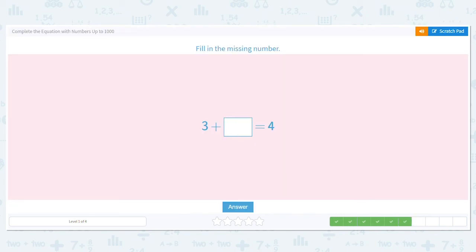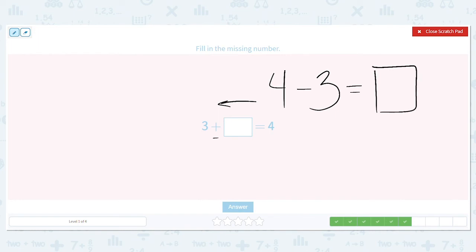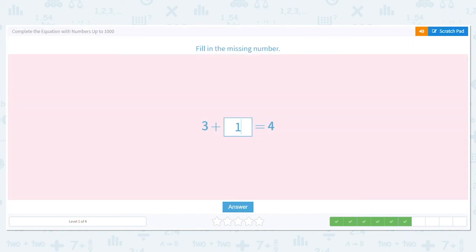Our next problem says, 3 plus blank equals 4. Can I use subtraction to help with this addition problem? Yes, please. Remember, we're going to work backwards. So what will my subtraction problem be? It will be 4 minus 3, because those are the two numbers we're given. What is 4 minus 3? It's 1. So that means the 1 is our missing number here. Is 3 plus 1, 4? Yes, it is. So that means 1 is our correct missing addend.